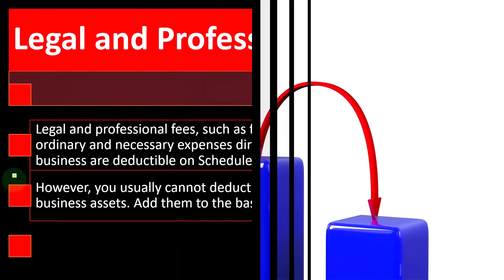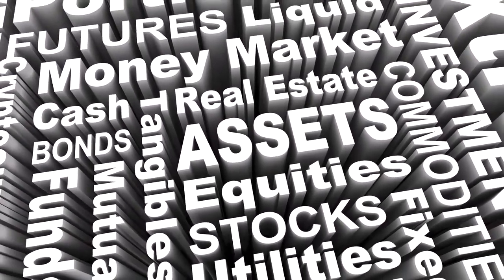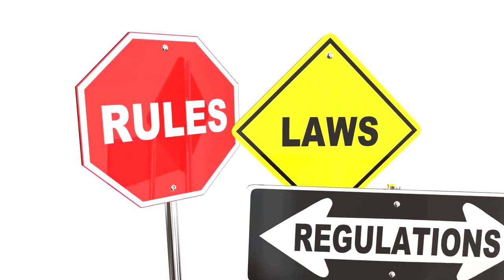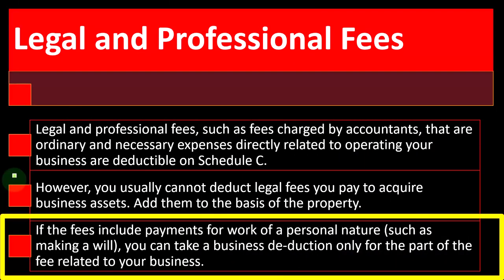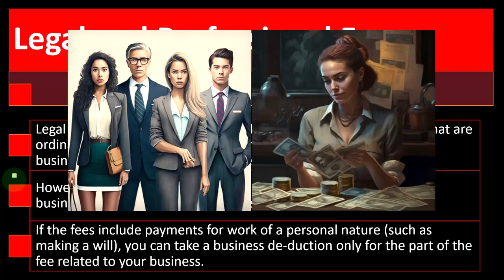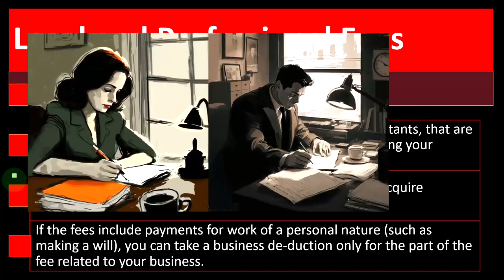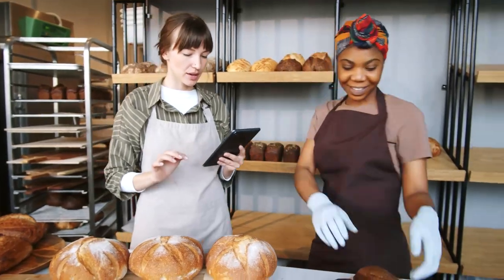The question is whether you have to capitalize it as a fixed asset and then possibly depreciate it. From a tax standpoint, we would generally rather not do that, because as we saw when looking at depreciation, the general rule is that we'd like to get the expense as early as possible. If the fees include payments for work of a personal nature, such as making a will, you can take a business deduction only for the part of the fee related to your business. That's often where the fuzzy problem areas come in with taxes — when something can't be neatly split between business and personal, and you have to find a method to break out the business versus personal portion to deduct the ordinary and necessary business parts.